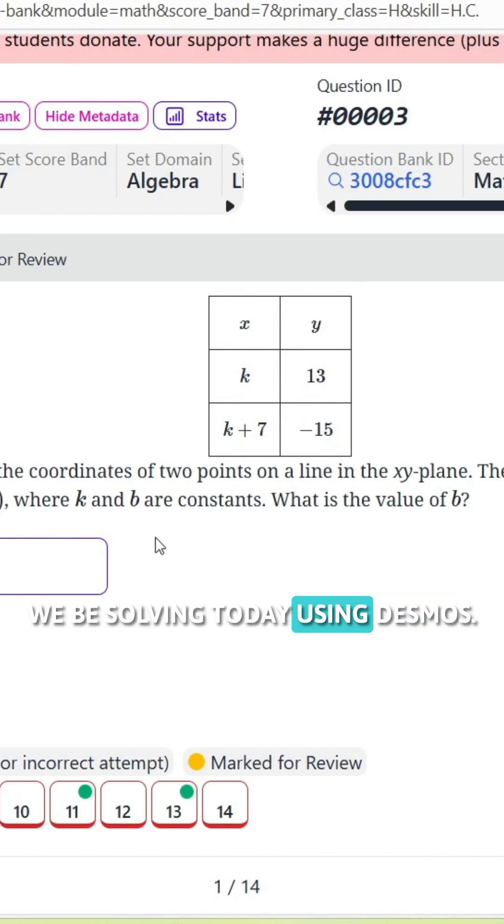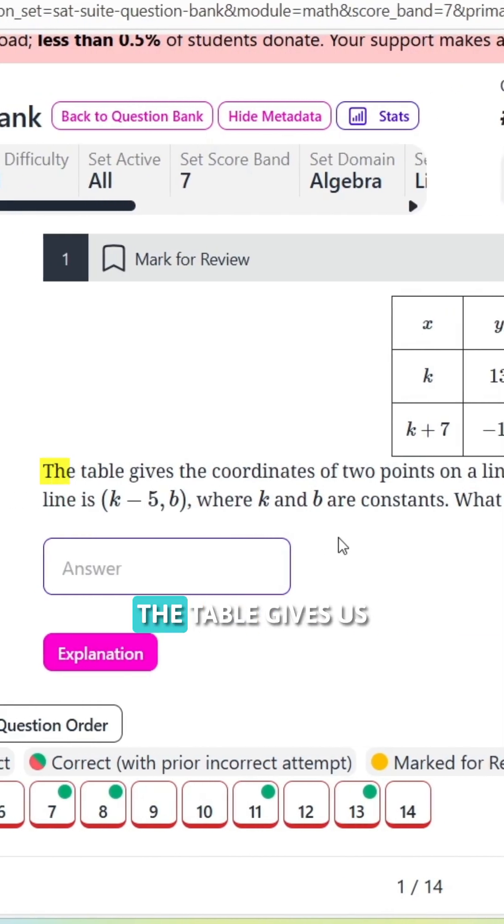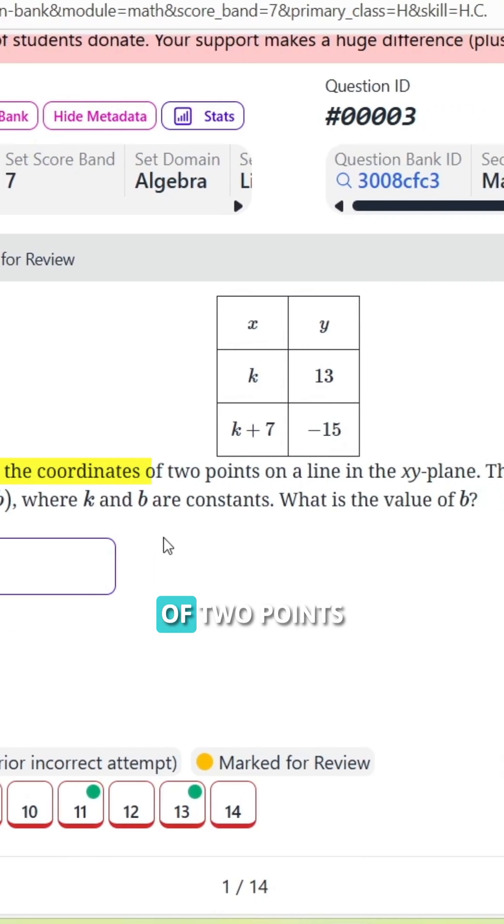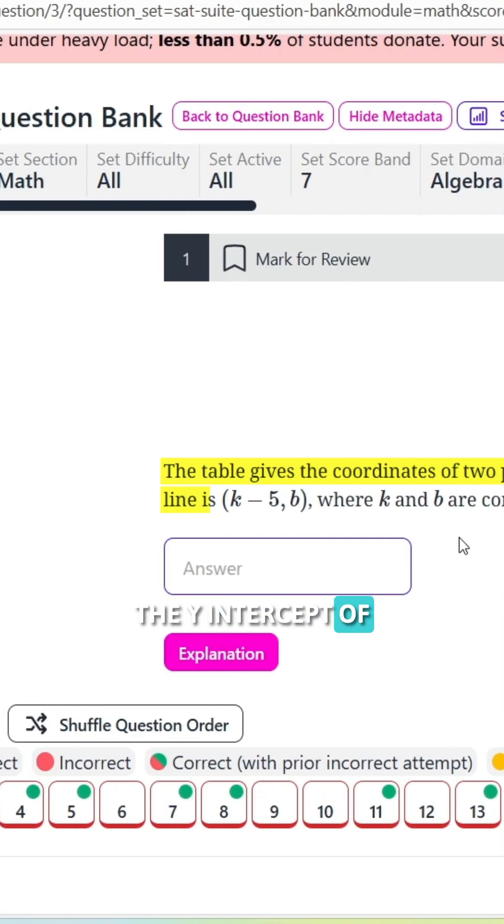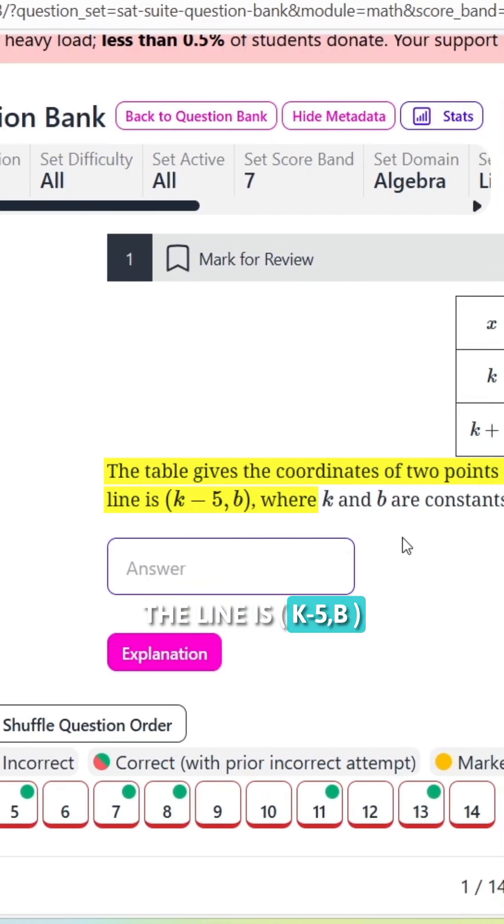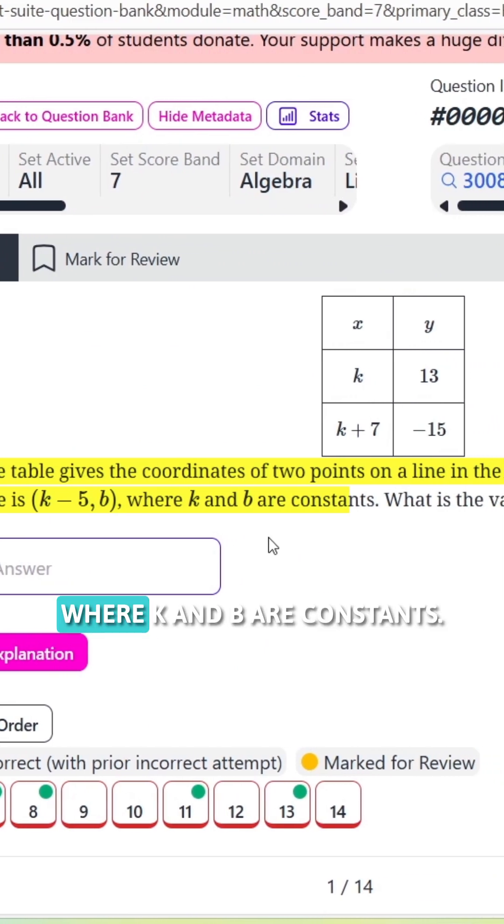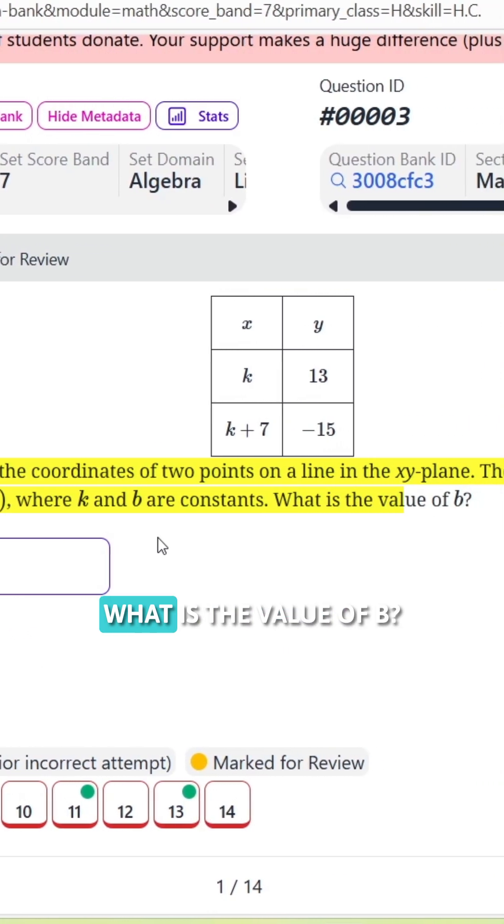All right, so here's the question we're going to be solving today using Desmos. The question says the table gives us the coordinates of two points on a line in the xy plane. The y-intercept of the line is k minus 5 comma b, where k and b are constants. What is the value of b?